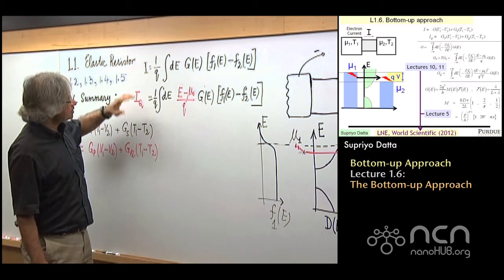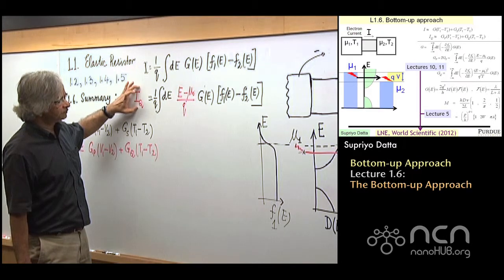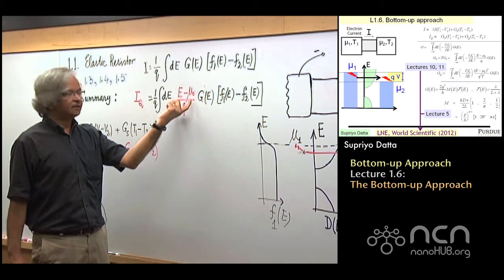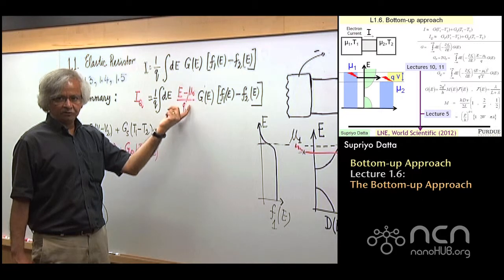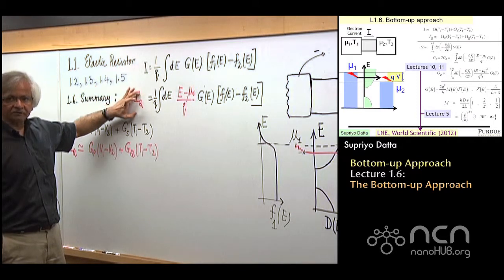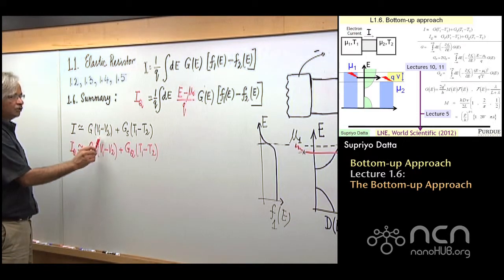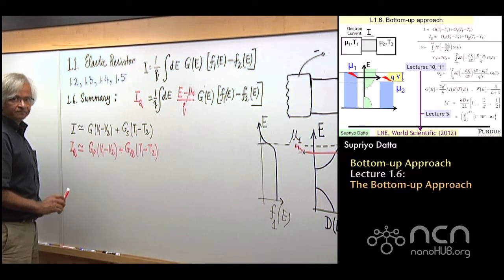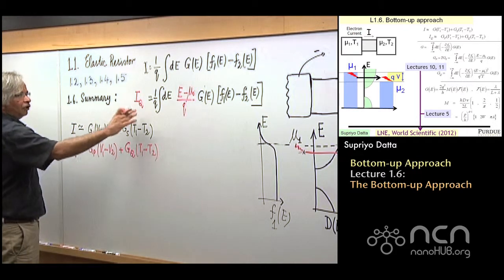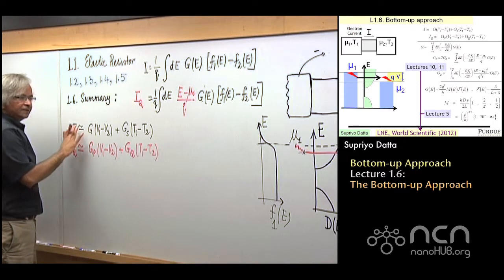Under these conditions, you can write the current in a relatively simple way. If I consider any energy range dE, I can write down the current as being proportional to F1 minus F2. There is something here that depends on the density of states, which you could call the conductance function. If I want the total current, all I have to do is add up all the energies, and adding up basically means this integral.